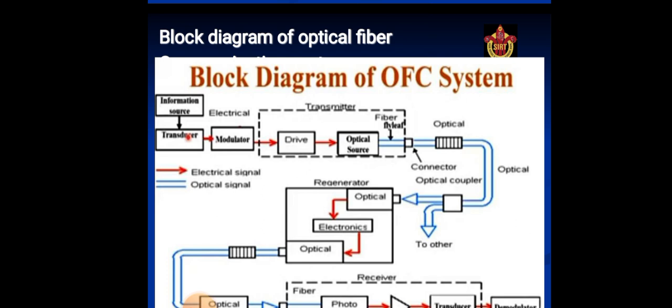Next is channel coupler. Channel coupler feeds the power into information channel. For an atmospheric optic system, the channel coupler is a lens used for collimating the light emitted by the source and directing this light towards the receiver.